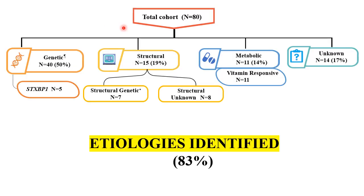On looking at the etiologies, we found that out of the total 80 patients, a cause could be identified in 83% of the babies. The most common etiological group was genetic only, comprising 50% of the patients. STXBP1 gene was found to be the most common gene.